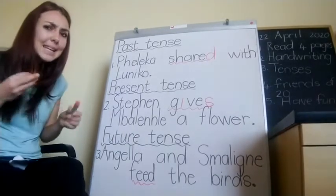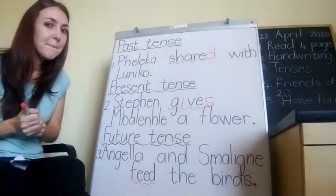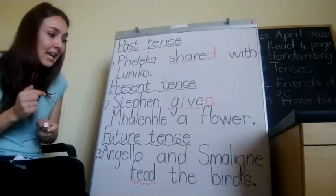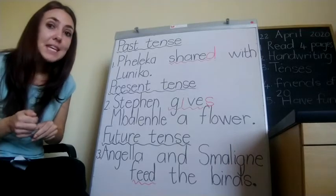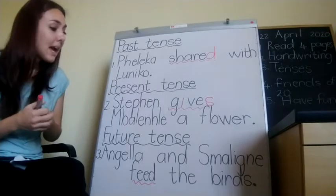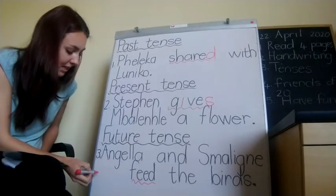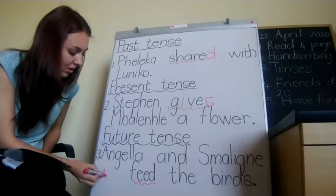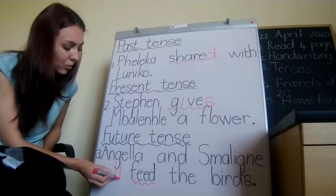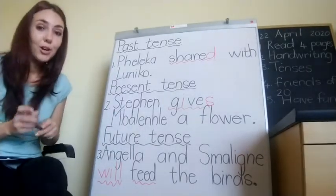But do I need to change the word if it's a future tense sentence? Let's quickly read it so we can hear how it sounds. Today Angela and Smalingne feed the birds. But tomorrow Angela and Smalingne will feed the birds. All I do is add the word 'will', and that means it will happen tomorrow.